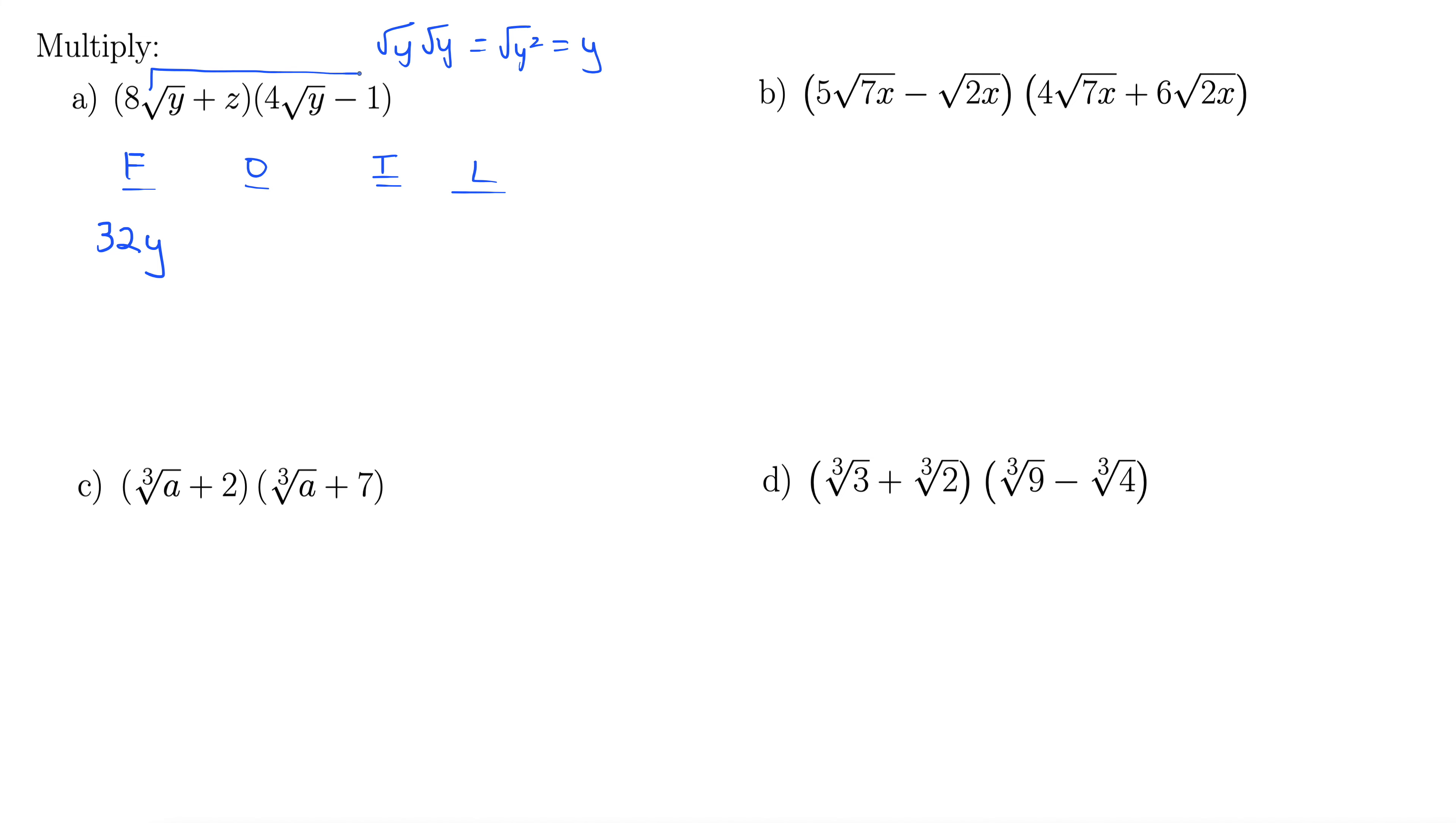Outside, we're doing the outside here. 8 rad y times negative 1 is minus 8 rad y. Inside plus 4z rad y. And then last, we're doing z and minus 1, so minus z.